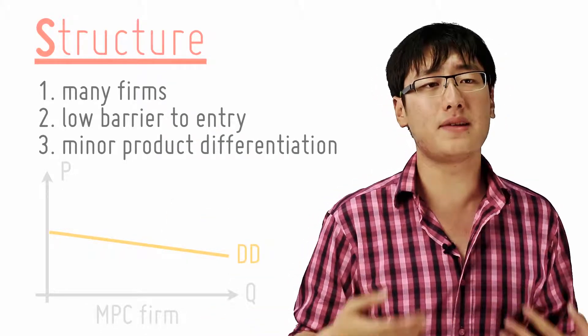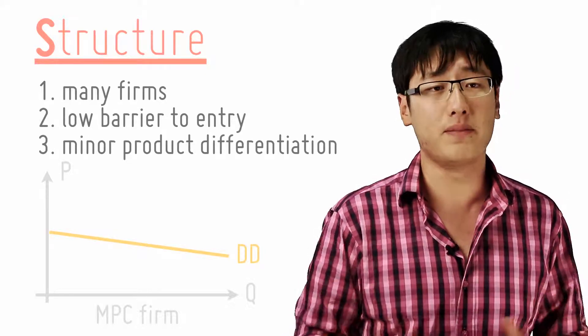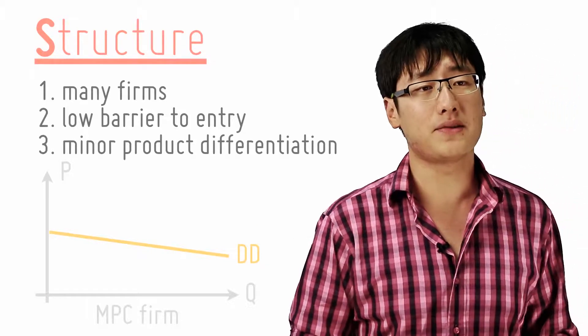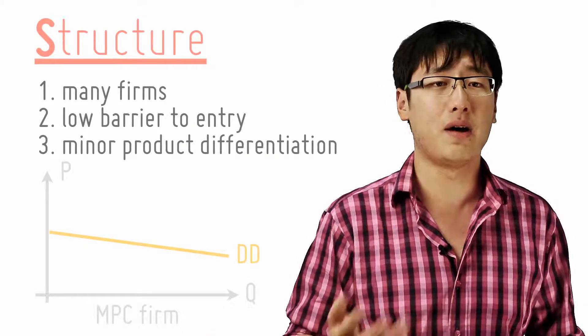So the monopolistic competitive firm's demand curve is usually elastic but still downward sloping. It is elastic because there is only a small differentiation, not large, so there is still a certain amount of substitutes.